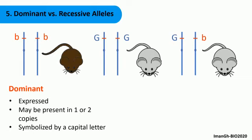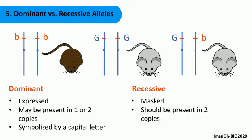However, the allele coding for brown is recessive. The recessive allele is masked in the presence of a dominant allele. It is expressed in the phenotype only when two copies of it are present. A recessive allele is symbolized with a lowercase letter.